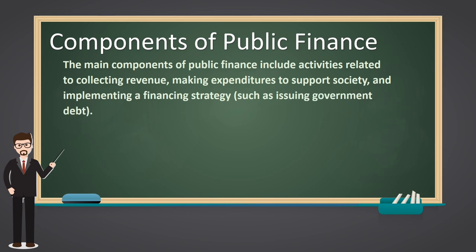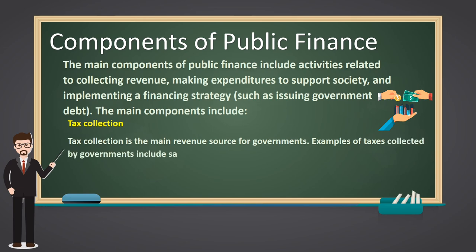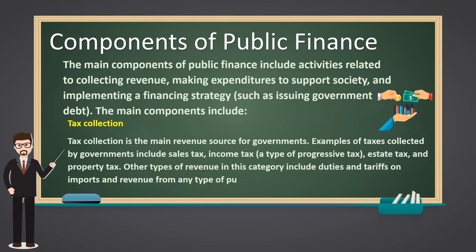The main components include Tax Collection. Tax collection is the main revenue source for governments. Examples of taxes collected by governments include sales tax, income tax — a type of progressive tax — estate tax, and property tax. Other types of revenue in this category include duties and tariffs on imports and revenue from any type of public services that are not free.